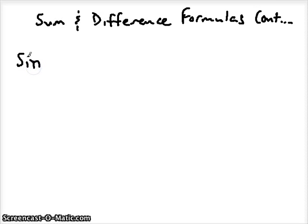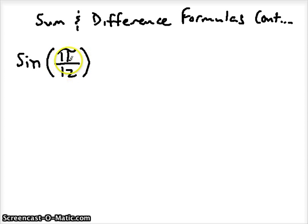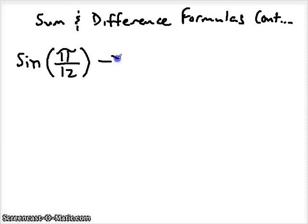Same process. The only difference is we're in terms of radians now. So if I want to take the sine of pi over 12 and find the exact value, this isn't going to be a nice angle on your unit circle that corresponds with coordinates we already know. So what we have to do is play around with it and use either a sum or a difference to get that value.